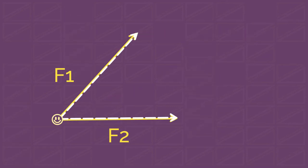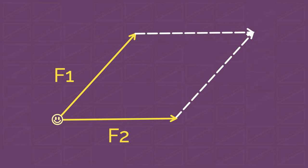Another method would be to put the tails of the two vectors together and draw a parallelogram like this. The diagonal vector that starts from the tails of F1 and F2 will be the sum of these vectors.